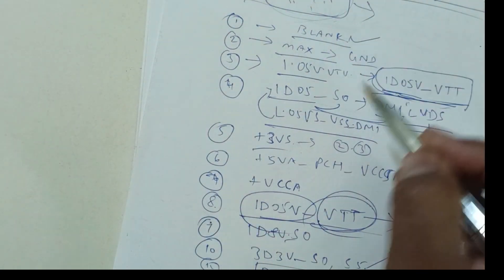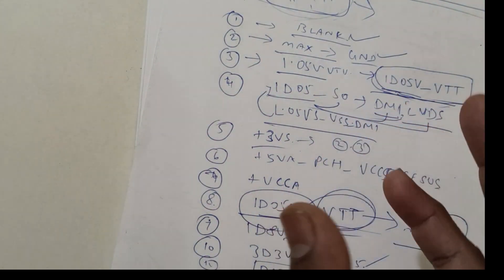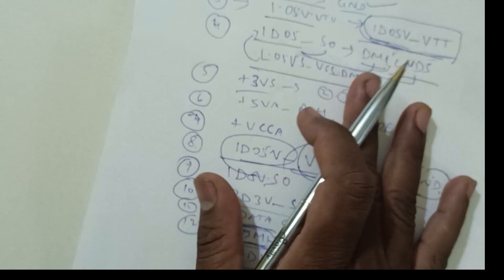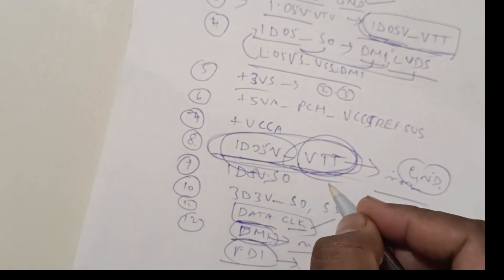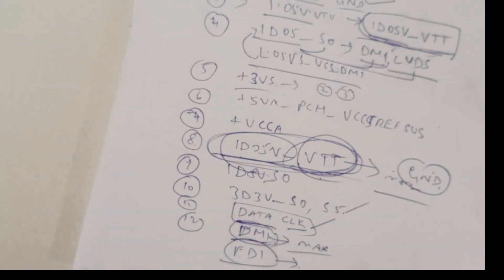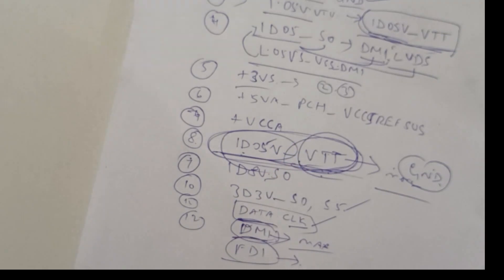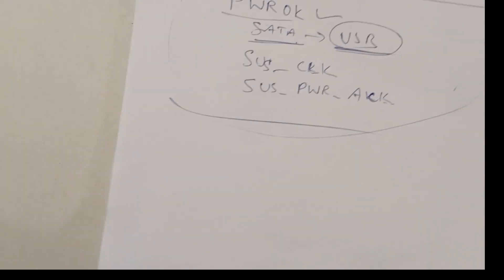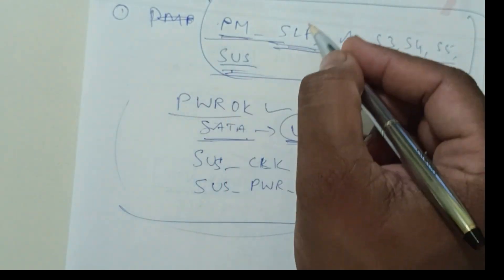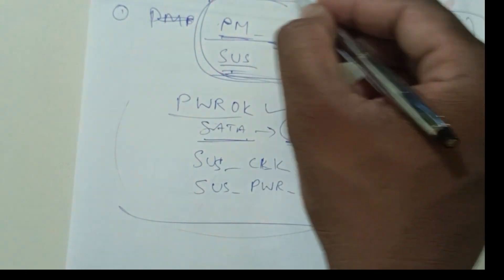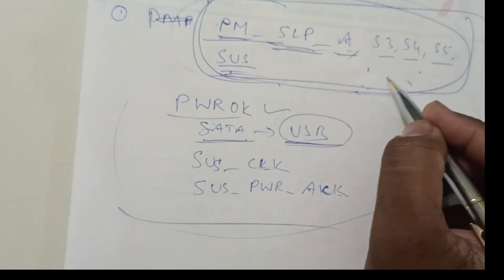It contains maximum number of blank, maximum number of pins ground, and maximum voltage. If we consider the maximum voltage, that is 1D05 VTT. Only this voltage you have to take more concentration. You have to give more concentration on VTT voltage 1D05V. Next, main concentration, the PM power management signals.